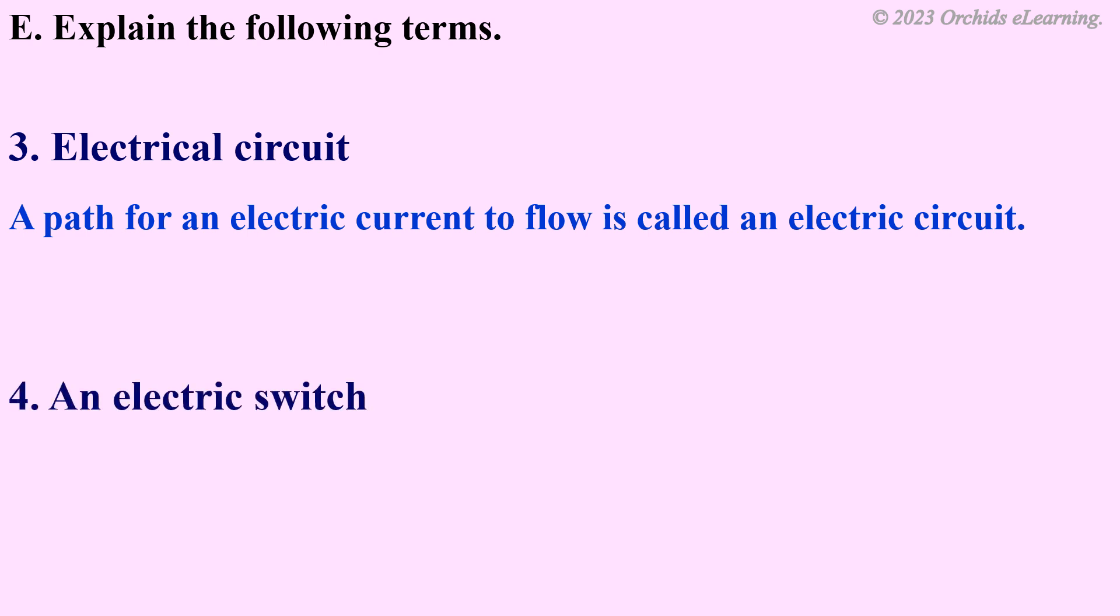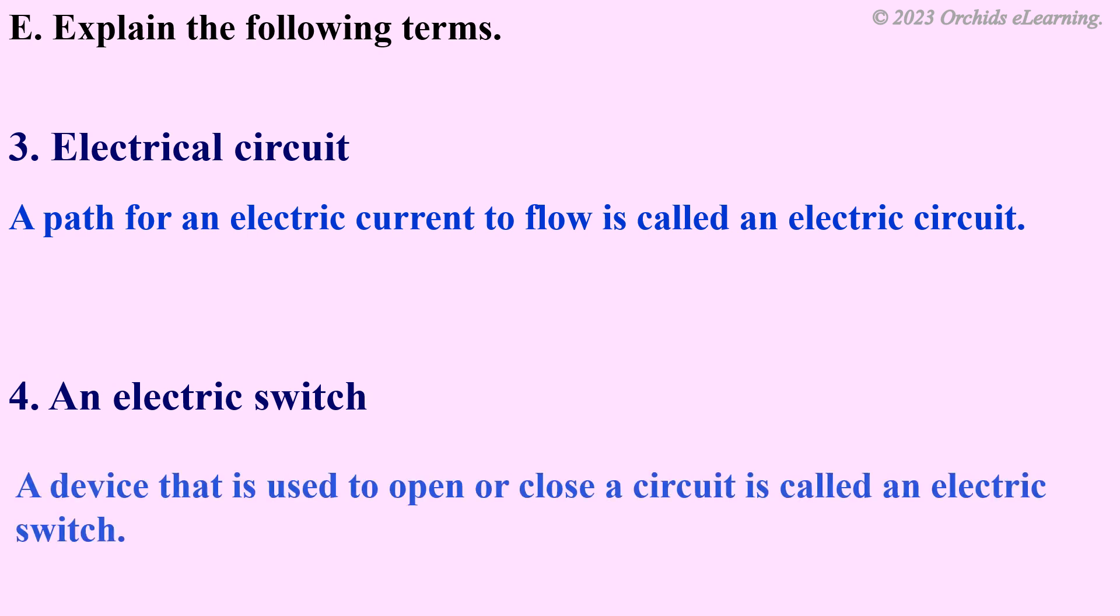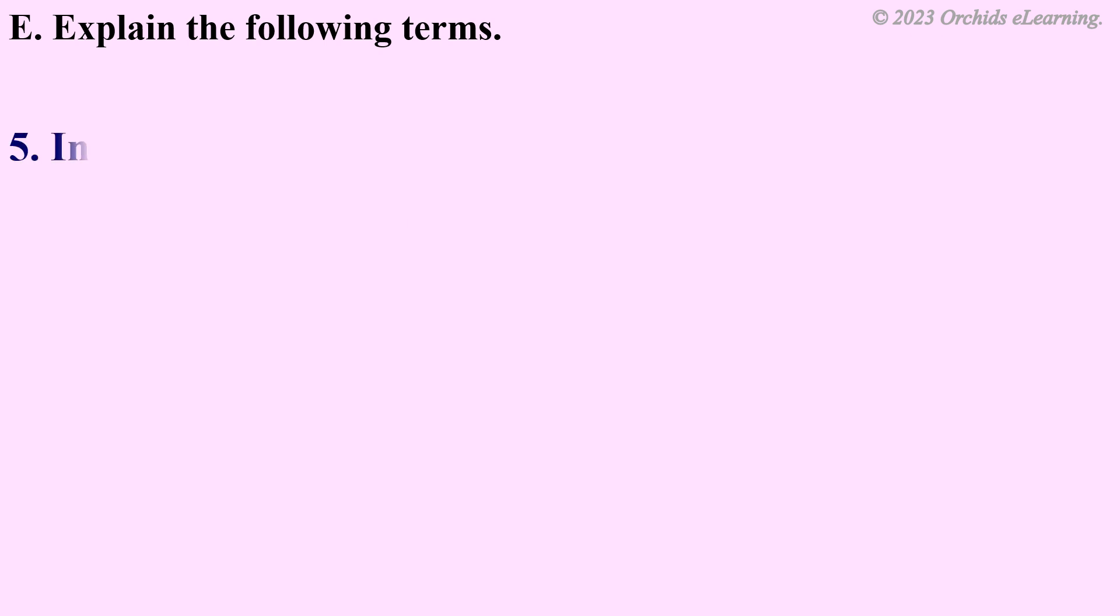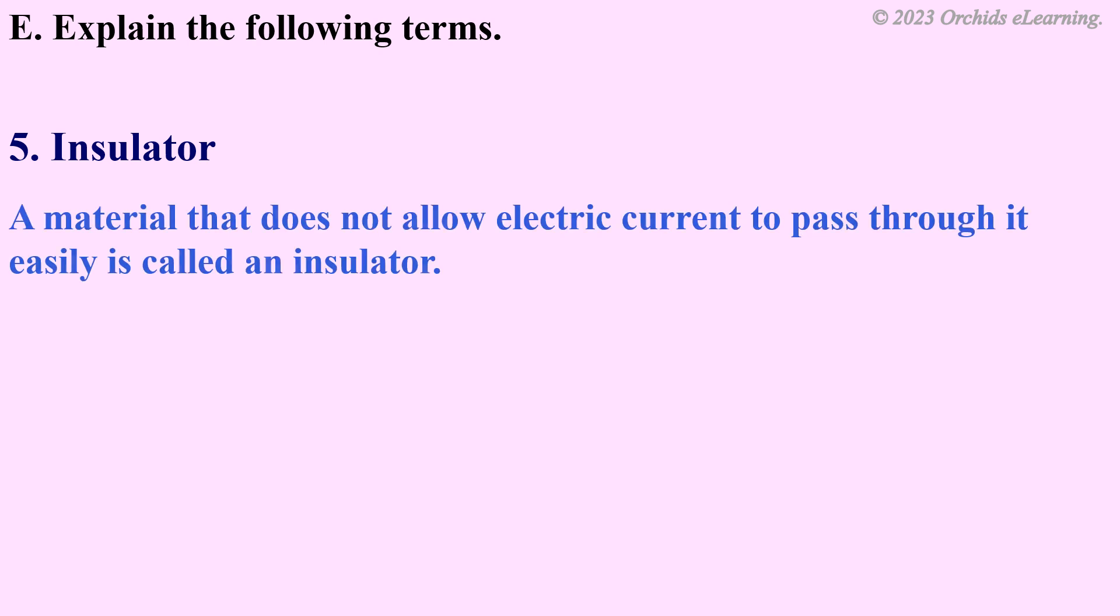A path for an electric current to flow is called an electric circuit. An electric switch: A device that is used to open or close a circuit is called an electric switch. Insulator: A material that does not allow electric current to pass through it easily is called an insulator.